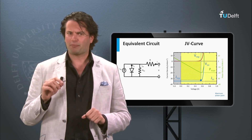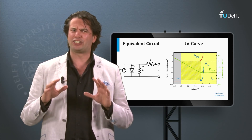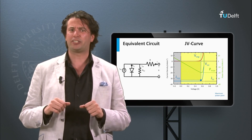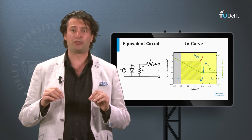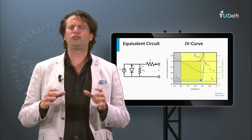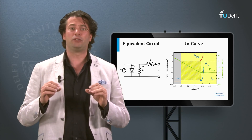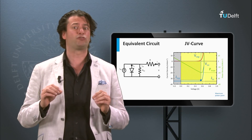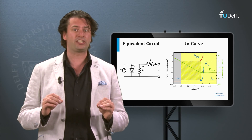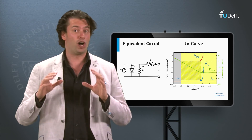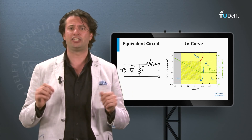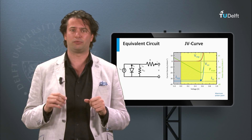In this block I will present a simple electrical circuit and corresponding current-voltage curves which are able to describe the behavior and the performance of solar cells under illumination and under voltage bias, as we have discussed in detail last week.